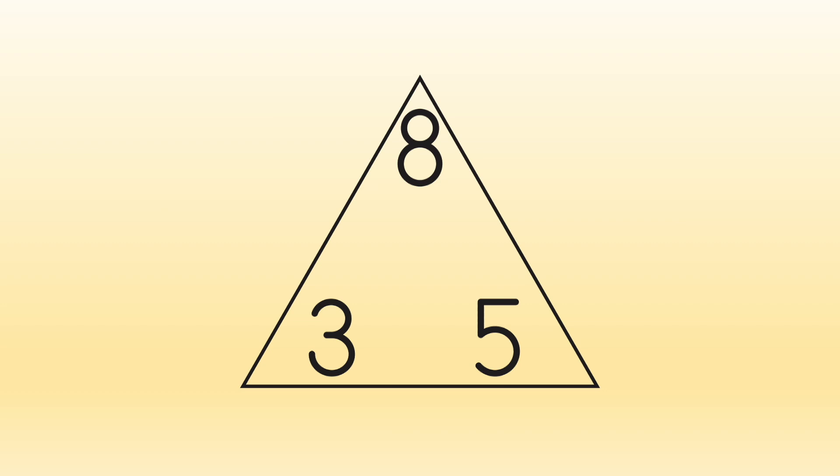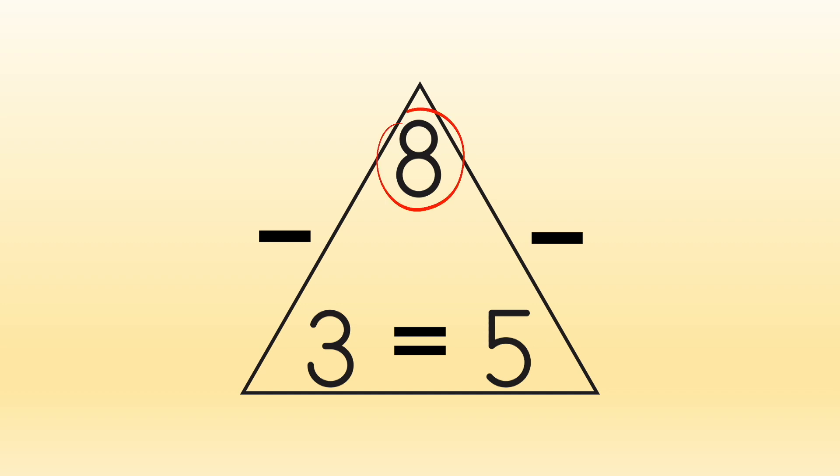And when you start at the top, go down and over, you get subtraction facts. Eight minus three equals five. And eight minus five equals three.